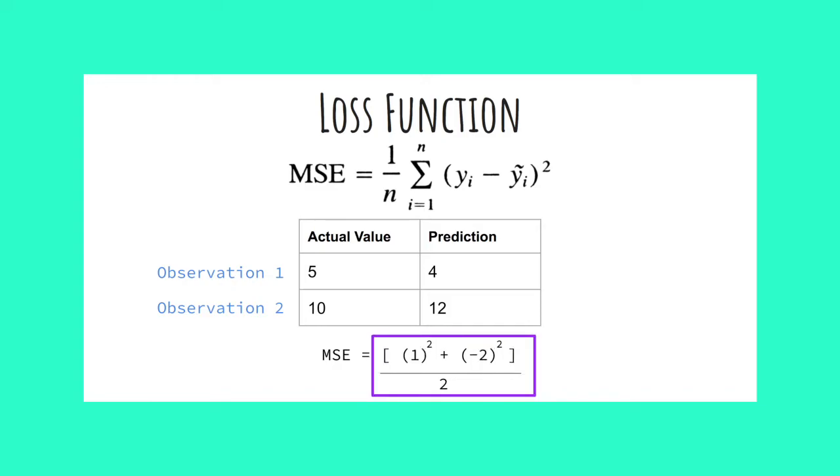We can simplify this formula to 1 squared minus 2 squared divided by 2. Again, we are squaring the error terms so we don't have negative values. This simplifies to 1 plus 4 divided by 2, which further simplifies to 2 and a half.